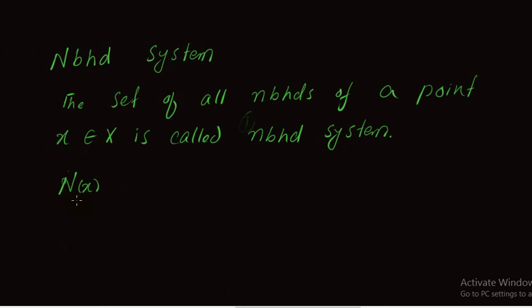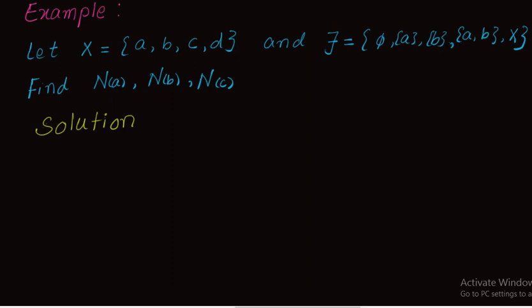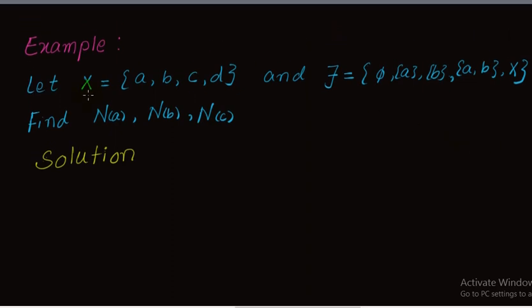Now we discuss how to find neighborhood and neighborhood system, for which we consider an example. Let X = {A, B, C, D} and τ = {φ, {A}, {B}, {A,B}, X}. This is our topology on set X. Find the neighborhood system of point A, neighborhood system of B, and neighborhood system of C.